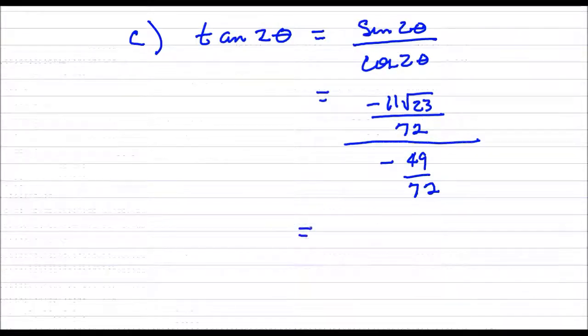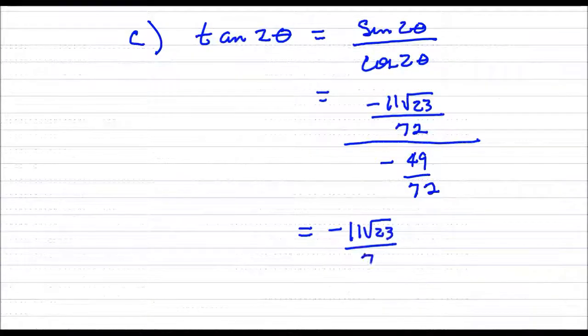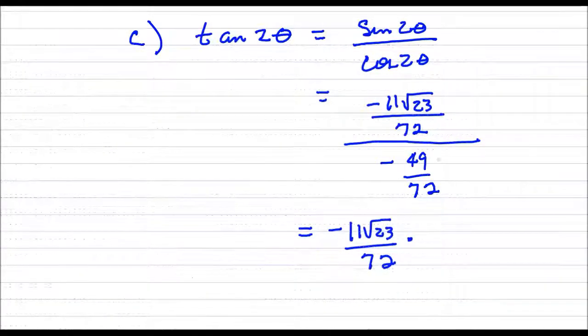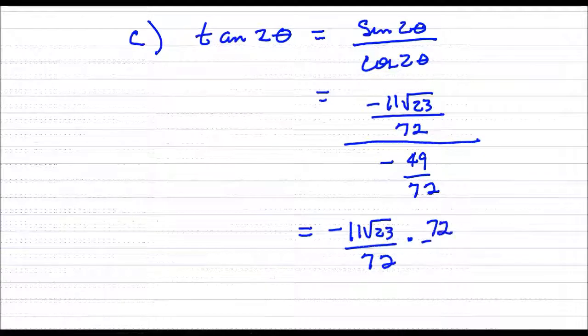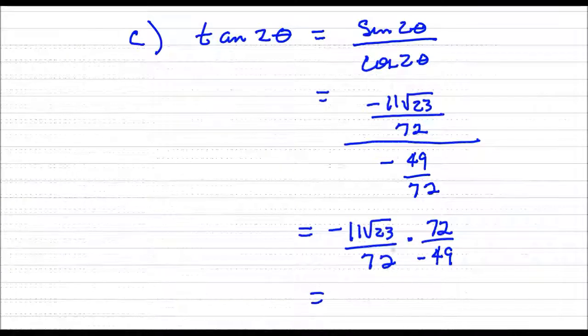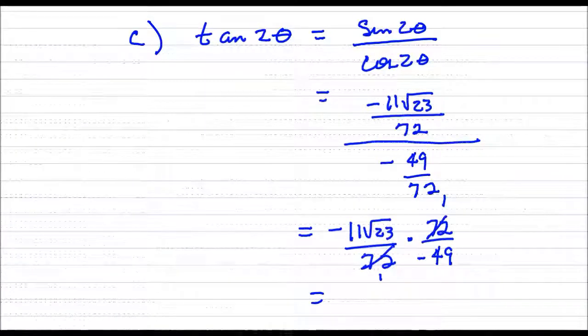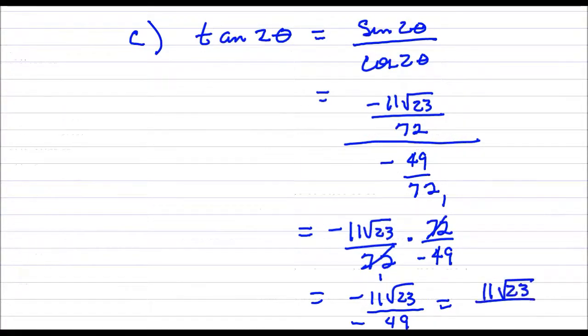Now, I can rewrite this complex fraction as multiplication. What I need to do is just take the numerator, which is negative 11 square root of 23 over 72, multiply by the reciprocal of this divisor here. That would be 72 over a negative 49. And when I simplify this, you can see that the 72's are going to divide out. So I am left with negative 11 square root of 23 over a negative 49. And that simplifies to a positive number, which is 11 times the square root of 23 over 49.